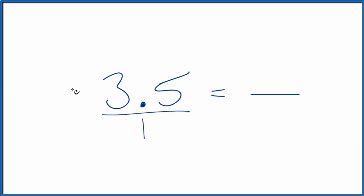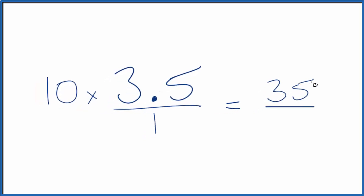If we multiply the top here by 10, the numerator by 10, 3.5 times 10, that would equal 35. But if we multiply the top by 10, we have to multiply the bottom by 10 as well. 10 times 1, that gives us 10, and now we have a fraction.